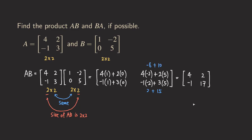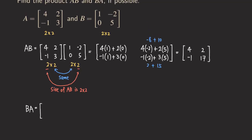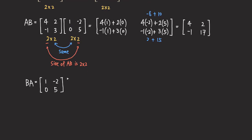Now we are going to try BA. BA is also possible because B is a 2 by 2 matrix and A is a 2 by 2 matrix, so the inner numbers are the same and the result will also be 2 by 2. This time we write B first: 1, negative 2, 0, 5. And then A: 4, 2, negative 1, 3.